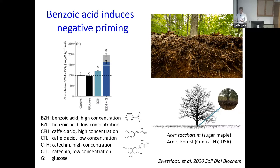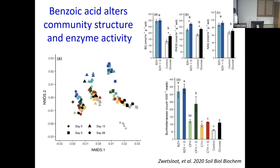So the question is: why is this happening? She was able to show that the priming is in no small part driven by changes in enzyme activity. Beta-galactosidase activity, phosphatase activity, and N-acetylglucosidase activity were all accelerated by the presence of this benzoic acid. So that's what we would expect with this negative priming.